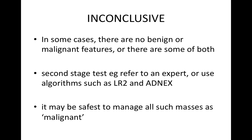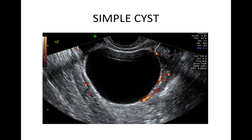The next few slides will show examples of common pathology with some videos. This is a simple cyst. It is unilocular, does not have any solid material, has anechoic contents, no shadowing and only minor vascularity. It was a paratubal cyst on histology.